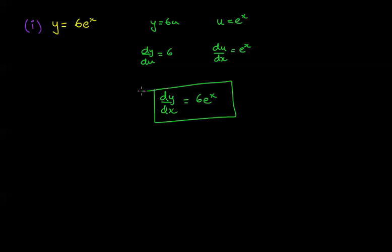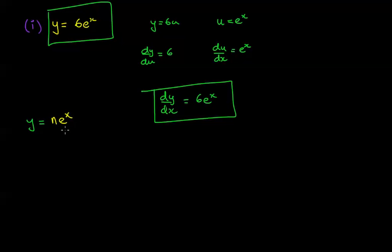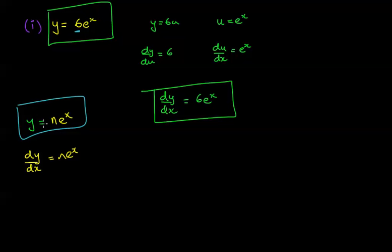What we've got here is just the same thing. The derivative of y equals 6 times e to the x is just 6e to the x. And in general, if y equals some number n times e to the x, the derivative is just n times e to the x. So when you have a number times e to the x, the derivative is just itself again.